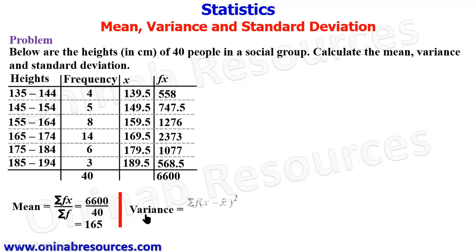So we have the formula for variance here. It is sigma f into (x minus x̄)² over sigma f minus one. The minus one is necessary because this is just sample data, since it is just a social group, not the entire population.